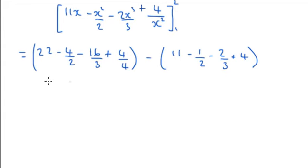And so that's going to be 22 take 2 take 16 over 3 plus 1, that's 47 over 3, minus 11 minus 1 half minus 2 thirds plus 4, that's 83 over 6.